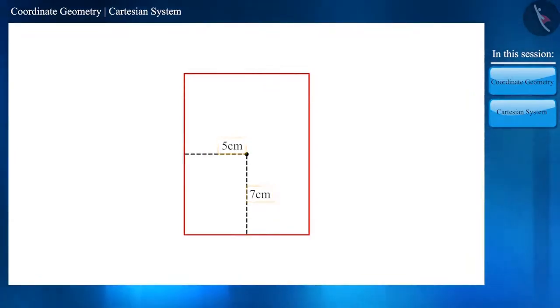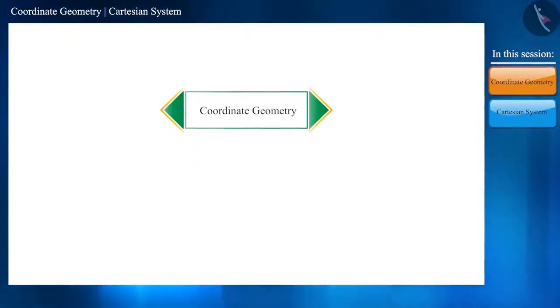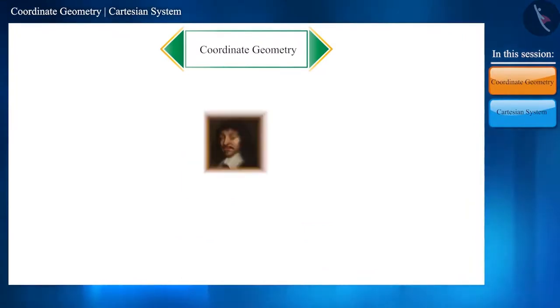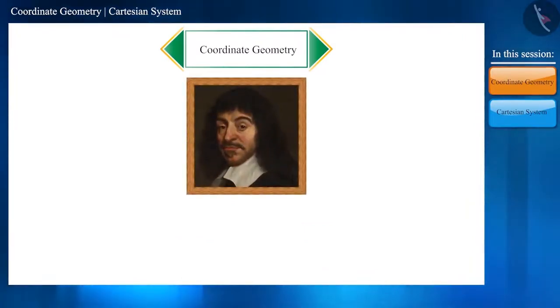This simple idea is being used extensively in mathematics, which is identified by the name of coordinate geometry. The origin of coordinate geometry was done by the great French mathematician René Descartes. That is why it is also called the Cartesian system.